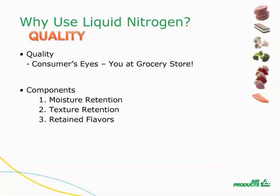The quality bucket can be thought of as characteristics that are important to the consumer — the person eating or consuming the food. This is you at the grocery store. Within quality, the benefits to using liquid nitrogen are moisture retention, texture retention, and retained flavors. We will discuss each of these in turn.